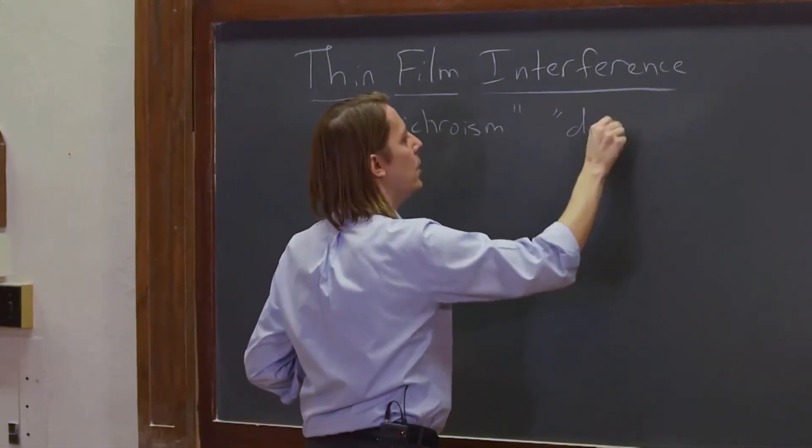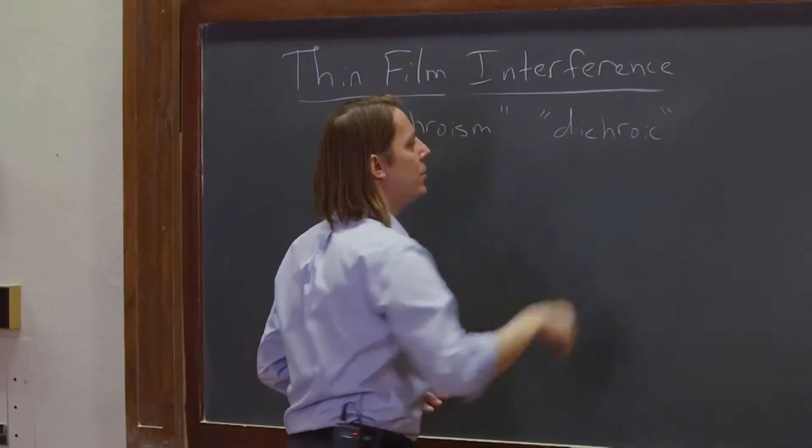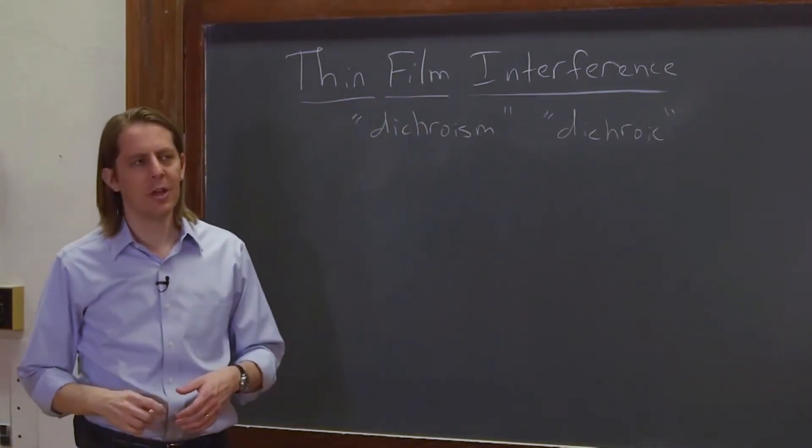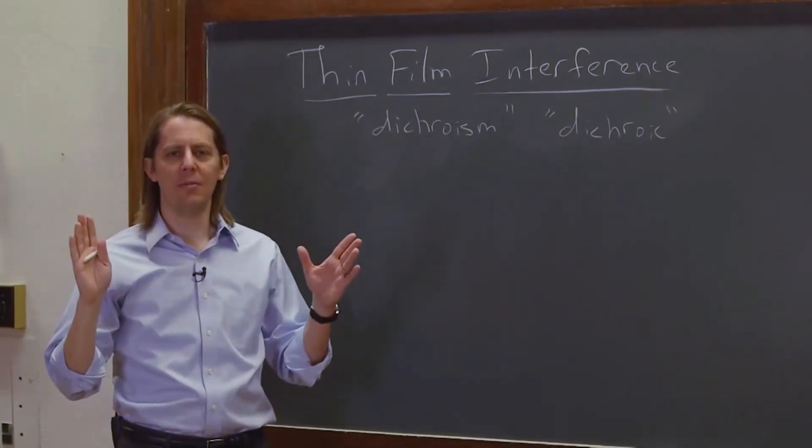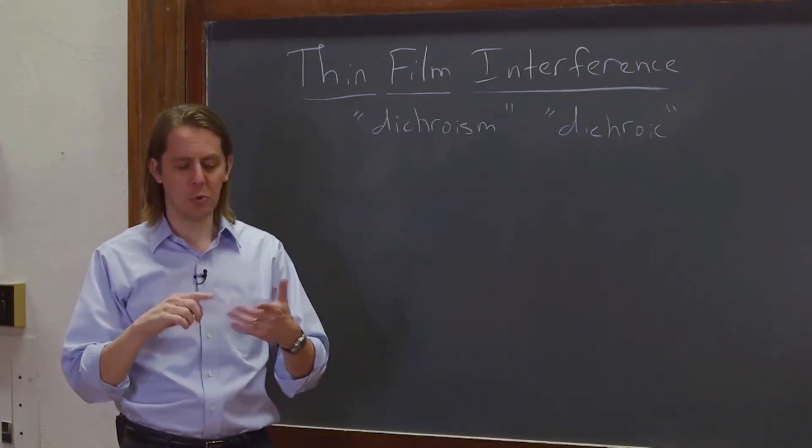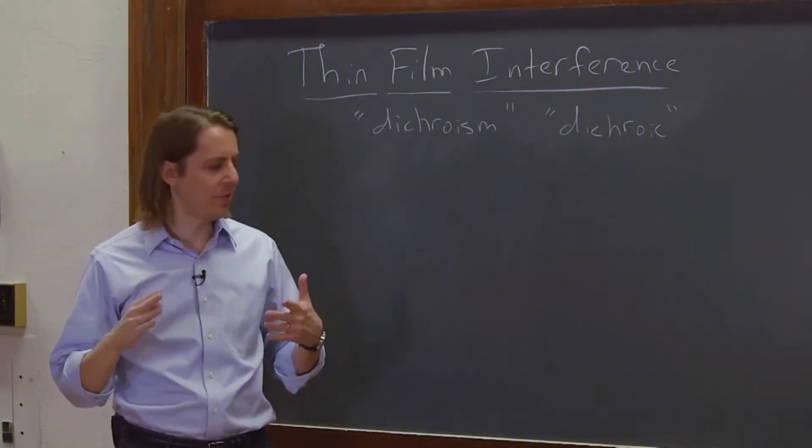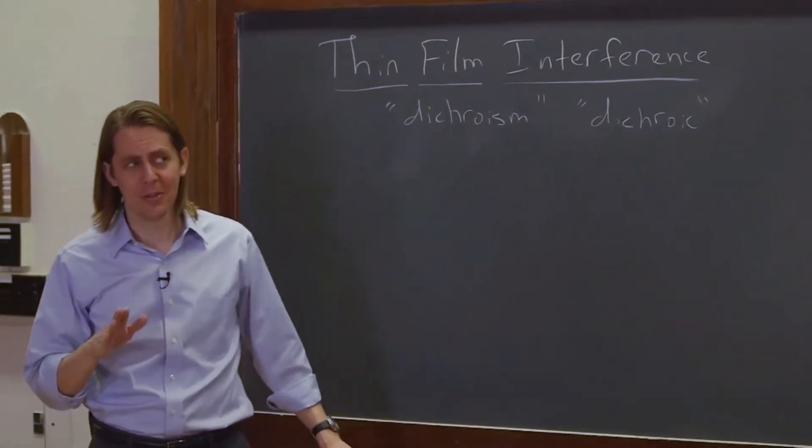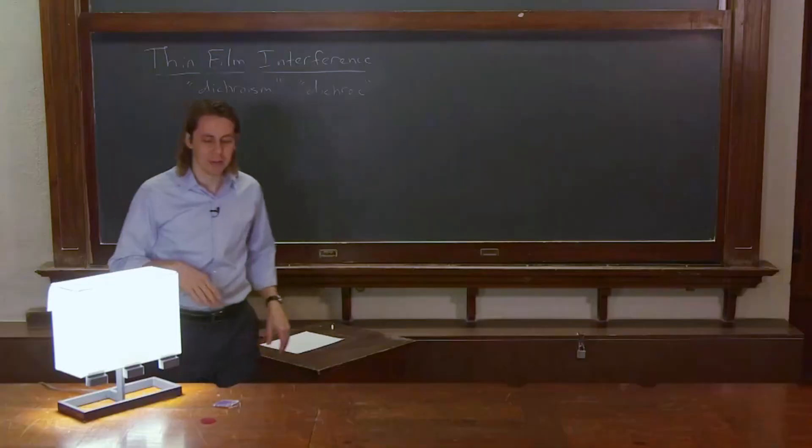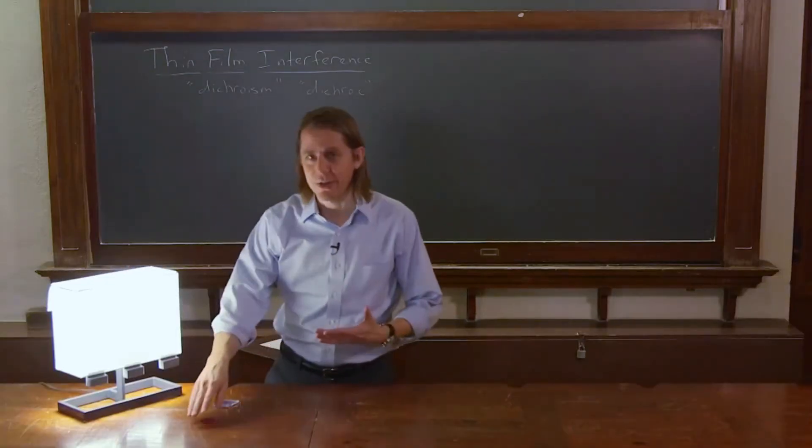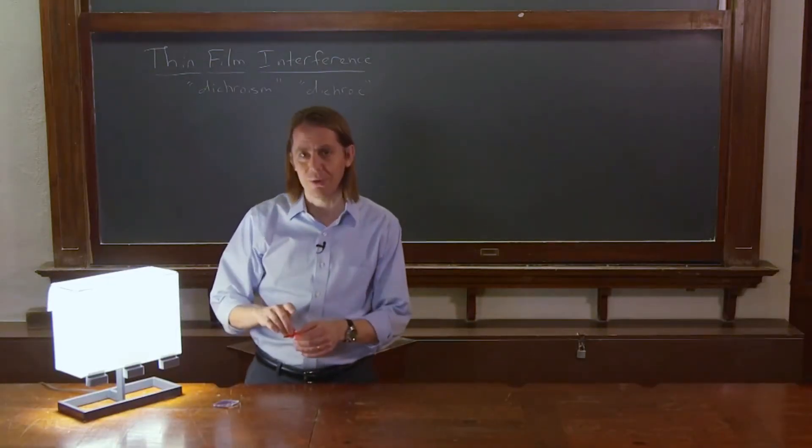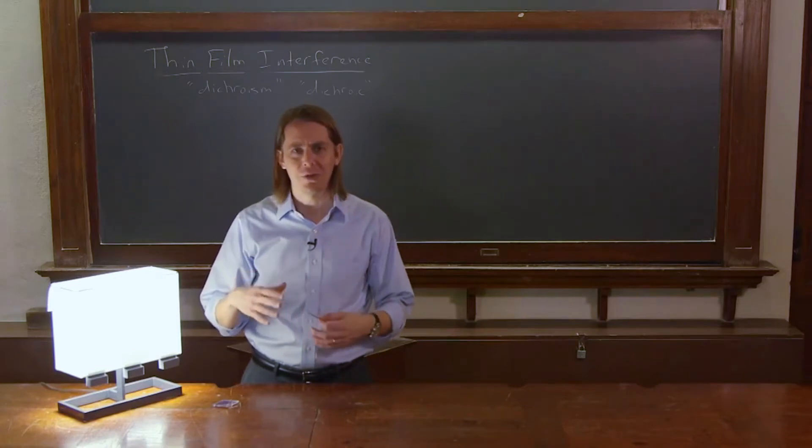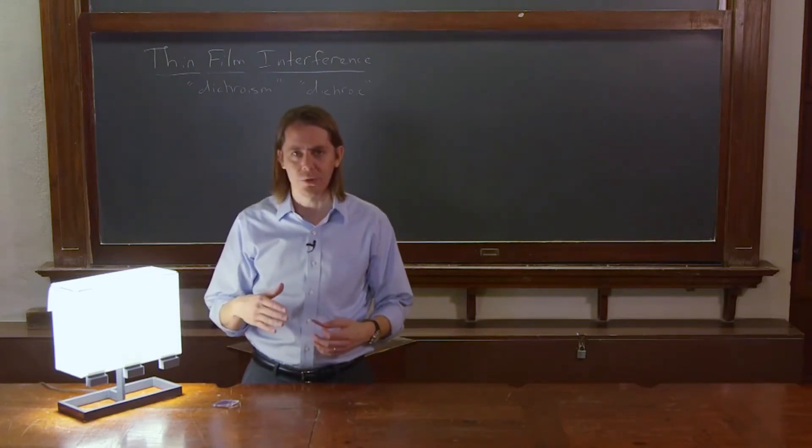If you Google image search the word dichroic, you'll get hundreds of images of artwork and jewelry and products and things that claim to be dichroic, and a few of them actually are. A lot of them I don't think they are, and a lot of them look highly photoshopped. So I'm going to show you how to tell when you're dealing with something that's colored due to pigments and absorption and something that's colored due to dichroism.